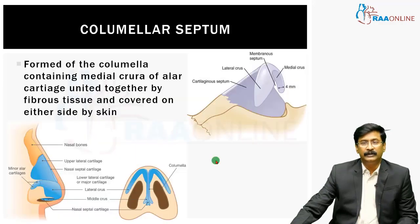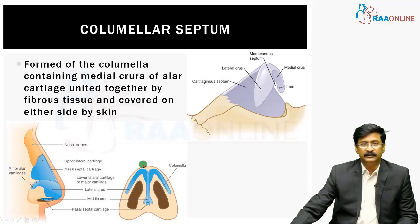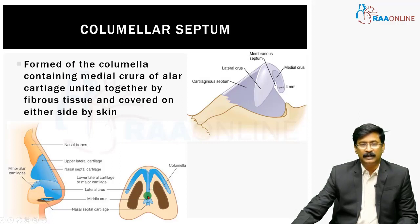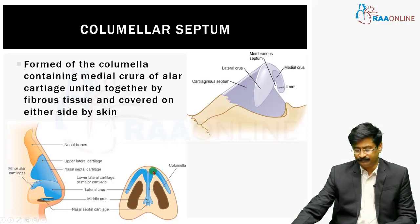Coming to the columellar septum — it is the anterior-most part, as seen in this picture. It is formed by the columella containing your medial crura and your lower lateral cartilage, which are united together by fibrous tissue and covered on either side by skin. This is the anterior-most part of your nasal septum.